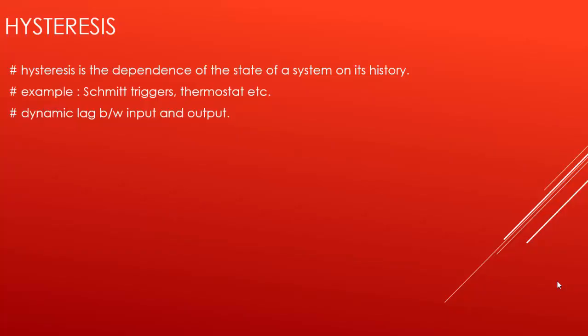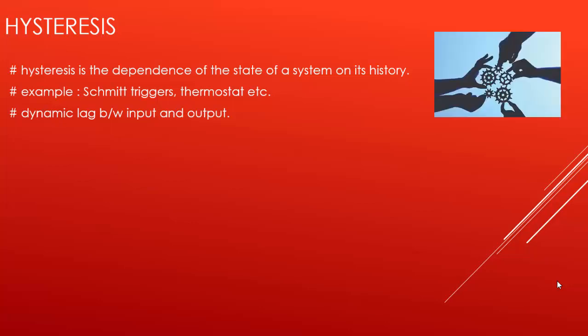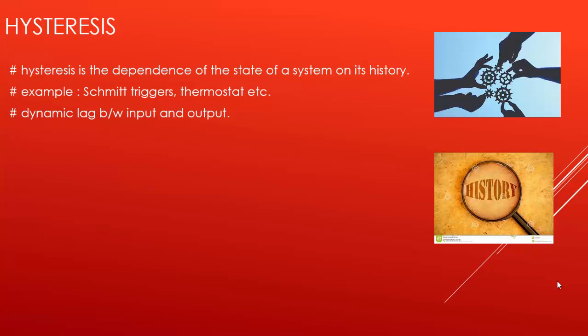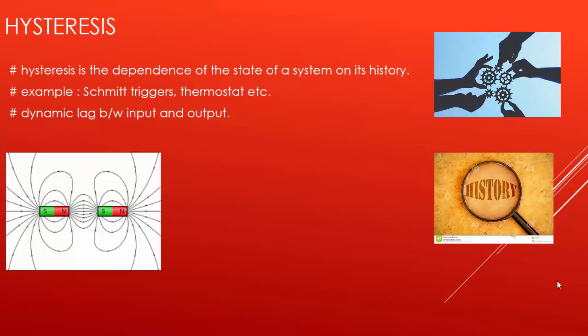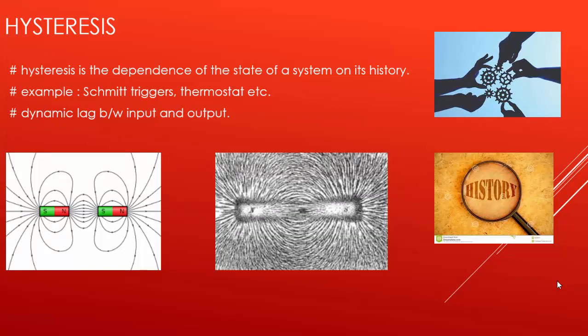Before starting up with Hysteresis Loop, we need to go through hysteresis. Hysteresis is dependence of the state of a system on its history. For example, a magnet may have more than one possible magnetic moment in a given magnetic field, depending on how the field changed in the past.